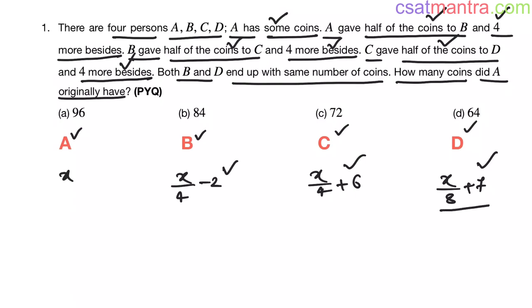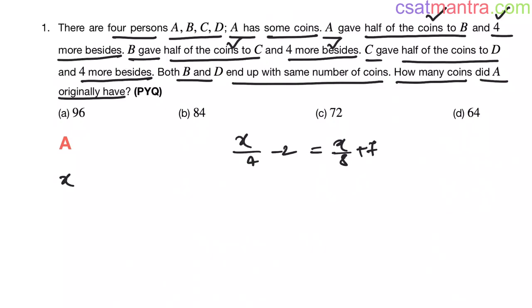Now it is said that both B and D end up with same number of coins. That means X by 4 minus 2 is equal to X by 8 plus 7. Now bringing X by 8 this side, X by 4 minus X by 8 is equal to 7 plus 2. Now this is X by 8 my friends. This is equal to 9. Now X is equal to 72.